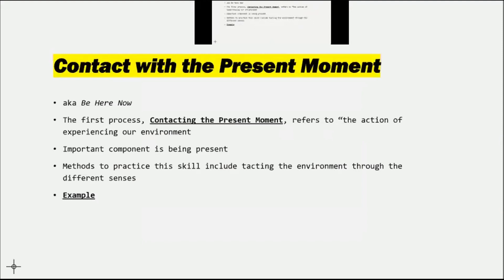Contacting the present moment can also be referred to as being here and now. This first process refers to the action of experiencing our environment — this includes both our private and external events as they're happening now, rather than focusing attention on events that have happened in the past or events that will happen in the future. Being present in the moment allows us to experience more of these environmental contingencies that will directly and possibly enable a person to engage in behavior that is functional at the moment.